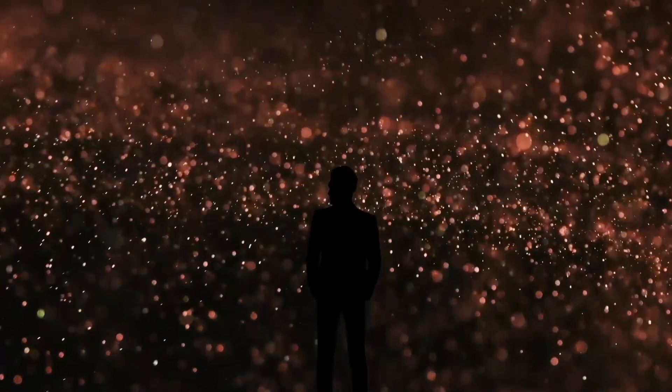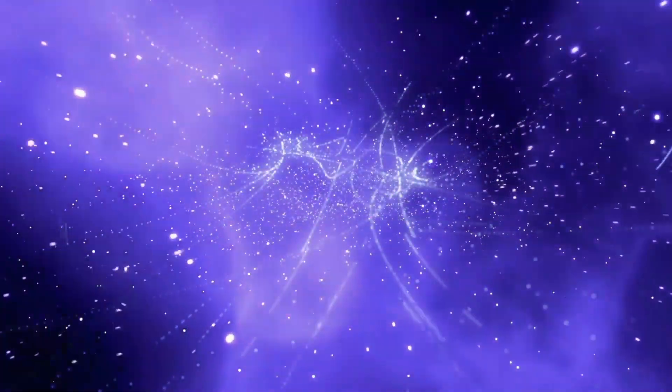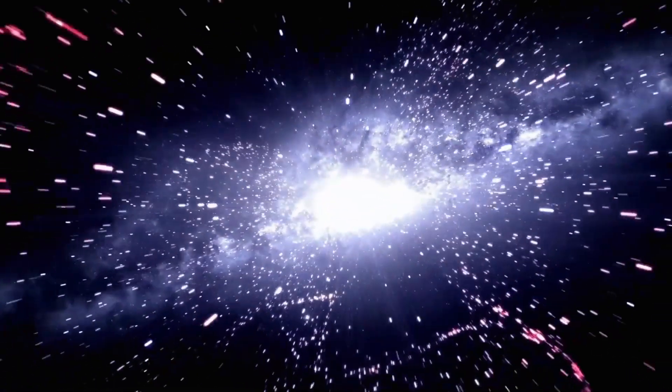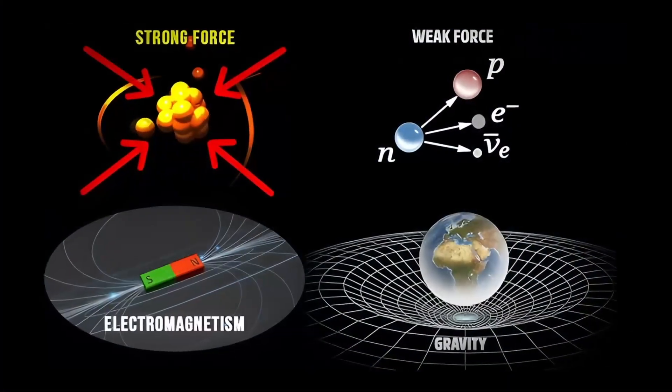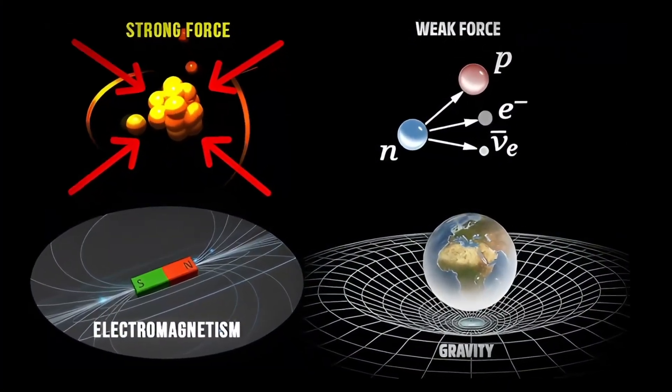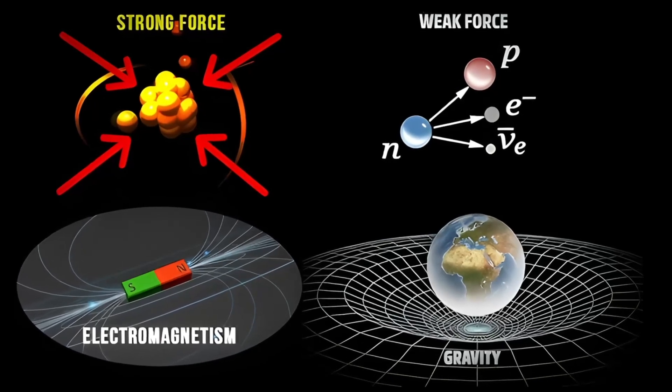Graviphotons are hypothesized to carry characteristics of both gravitons and photons, implying they could bridge the gap between gravity and electromagnetism. This opens the possibility of a fifth force beyond the four known fundamental forces: gravity, electromagnetism, strong nuclear force, and weak nuclear force.